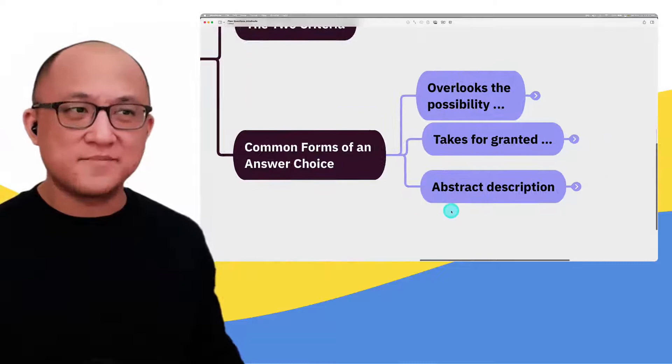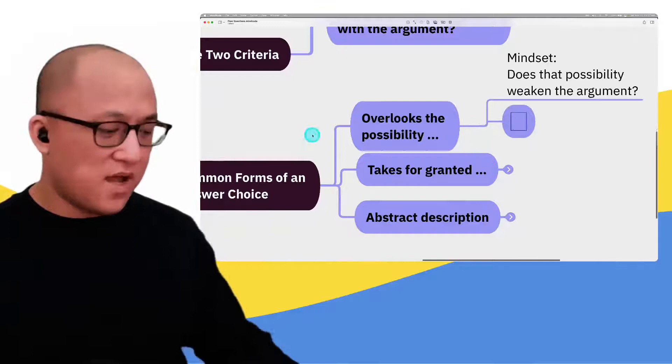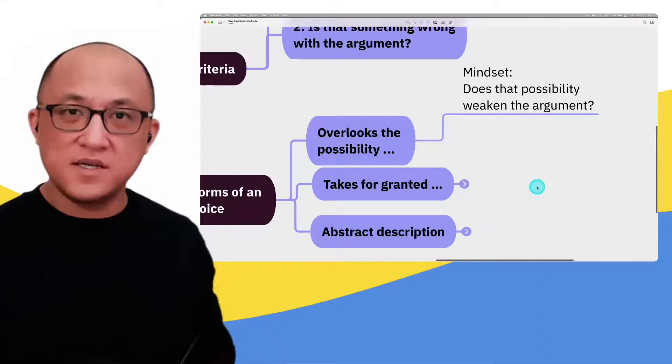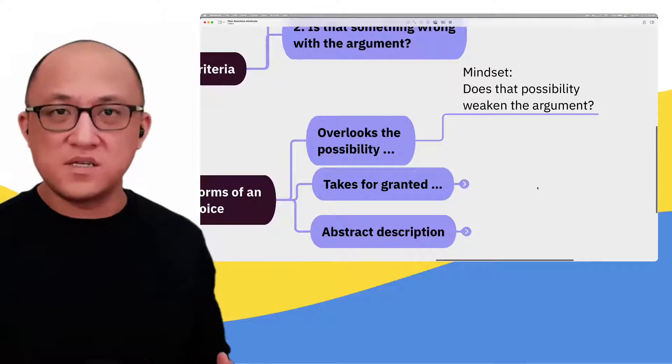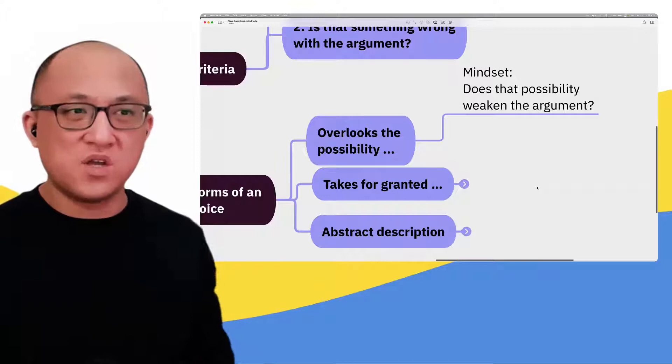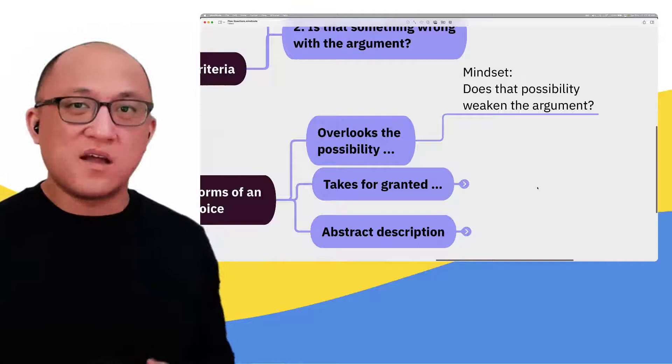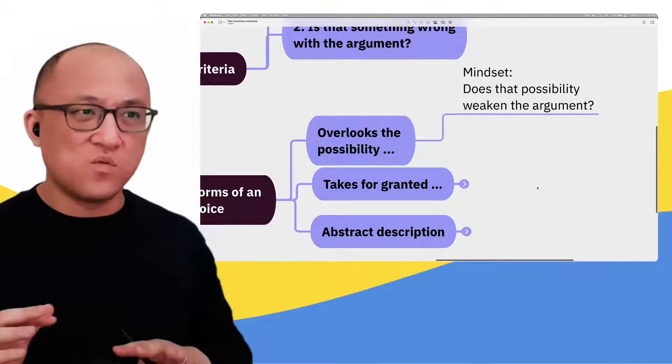If the answer is saying the argument overlooks a certain possibility, the main question I have in mind is: does that possibility weaken the argument? Because if that possibility would not weaken the argument, then it's not even relevant to the argument's logic. In other words, whether the argument considered that possibility is not something wrong with the argument if it doesn't weaken the argument.